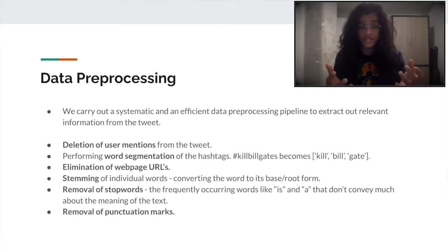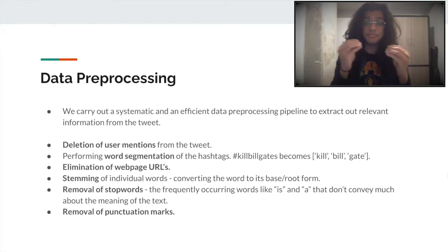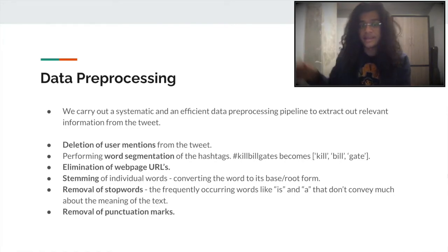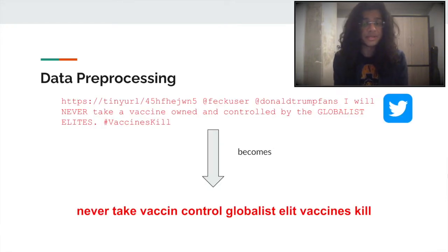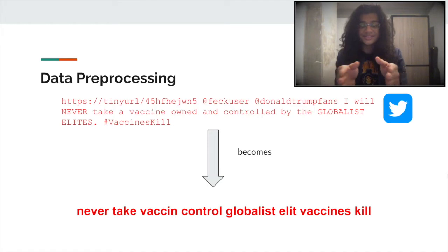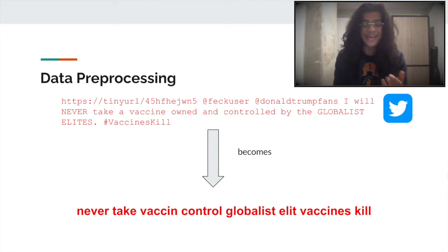We eliminate URLs, we stem words — that is, we bring them to their base form. For instance, the word 'depopulation' becomes 'depopul' and the '-ation' at the end is removed. We also remove stop words, which are words such as 'the' and 'a', which don't really contribute much to the meaning of the sentence from the perspective of a computer. After successfully pre-processing a tweet, we get a collection of words devoid of any stop words, no punctuation marks, and words that actually convey the meaning of the tweet.